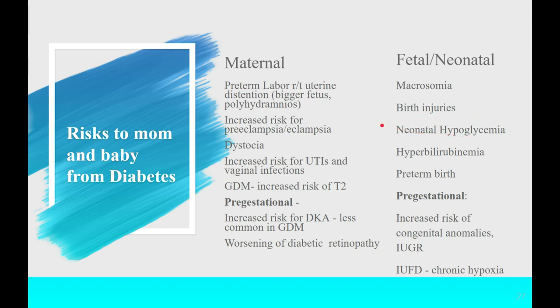Neonatal hypoglycemia is another risk. The baby has been receiving a steady sugar supply and producing its own insulin in response. When the cord is clamped and cut, the sugar supply stops, but the baby still has a large circulating supply of insulin. The baby's glucose can drop severely, and if it drops enough, brain cells will be damaged.